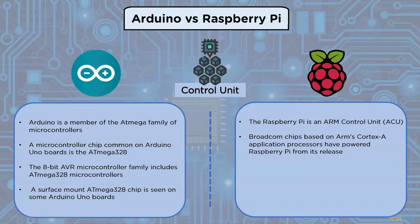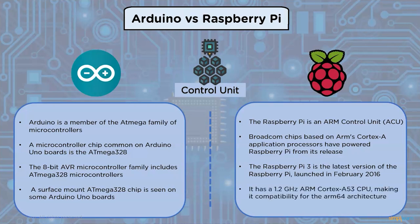The Raspberry Pi is an ARM controller unit. Broadcom chips based on ARM's Cortex-A application processor have powered Raspberry Pi from its release. The latest version of the Raspberry Pi, launched in February 2016, has a 1.2 GHz ARM Cortex-A53 CPU, making it compatible with the ARM64 architecture.